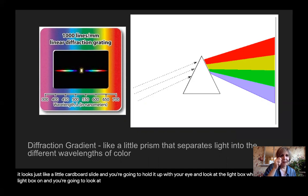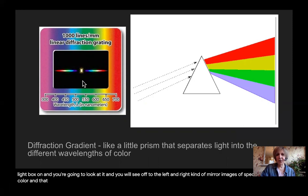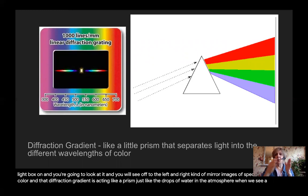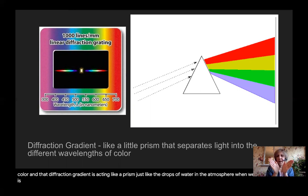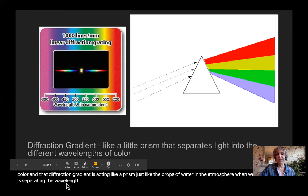And you're going to look at it and you will see off to the left and right kind of mirror images of specific bands of color. And that diffraction gradient is acting like a prism, just like the drops of water in the atmosphere when we see a rainbow. It is separating the light into specific wavelengths that we see as different colors of the rainbow.